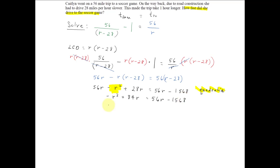Moving everything to the right side, we'll add r squared, and we'll subtract 84r. That way, the left side is 0, and we get 0 equal to r squared minus 28r minus 1568.